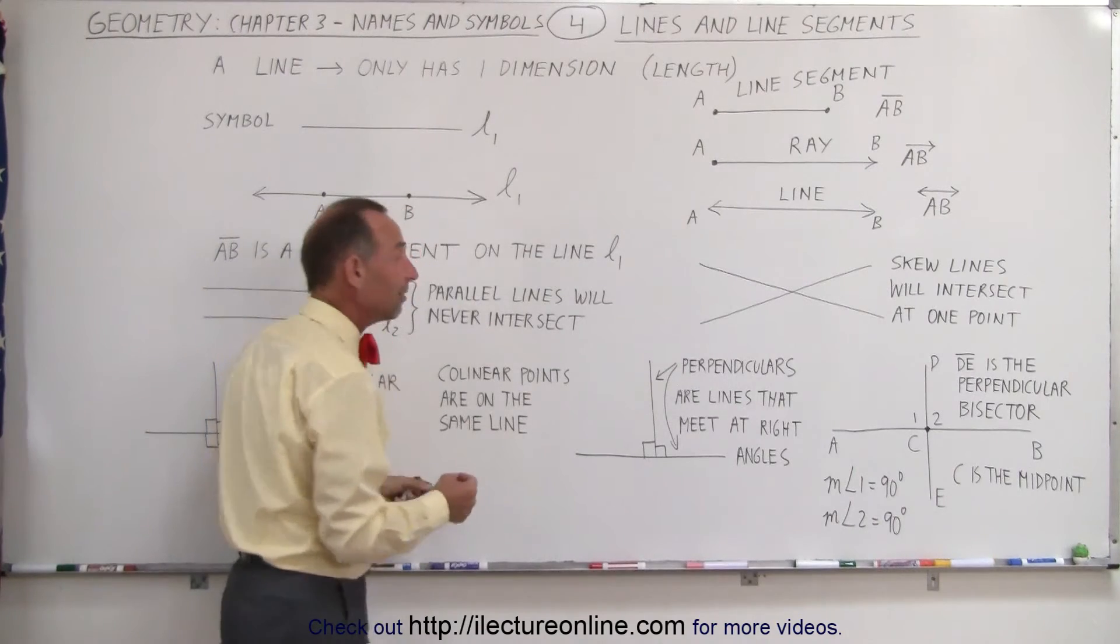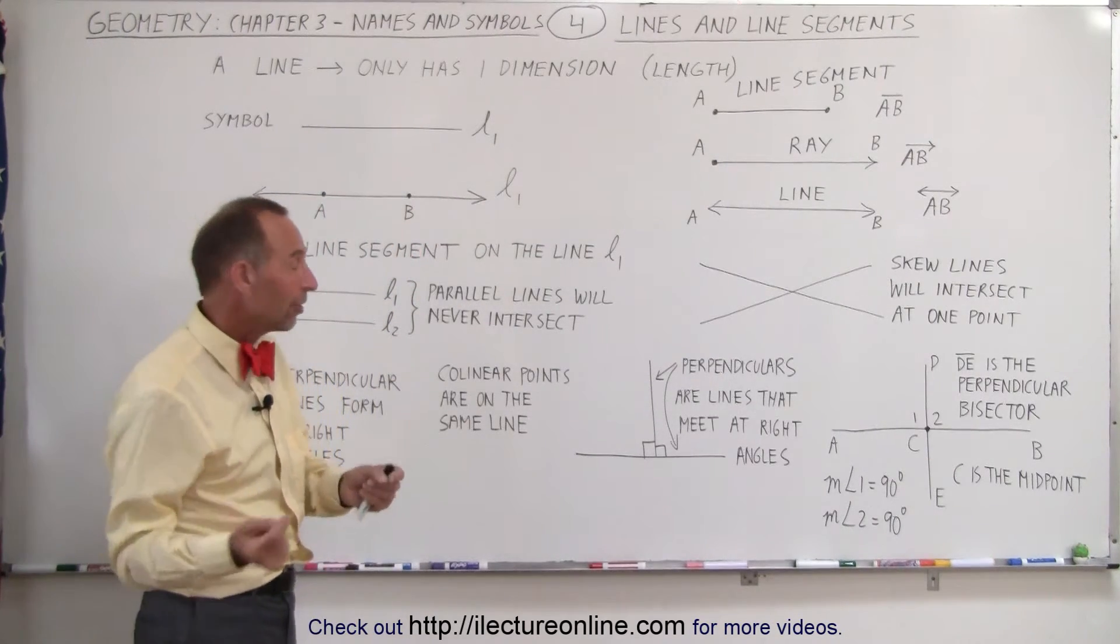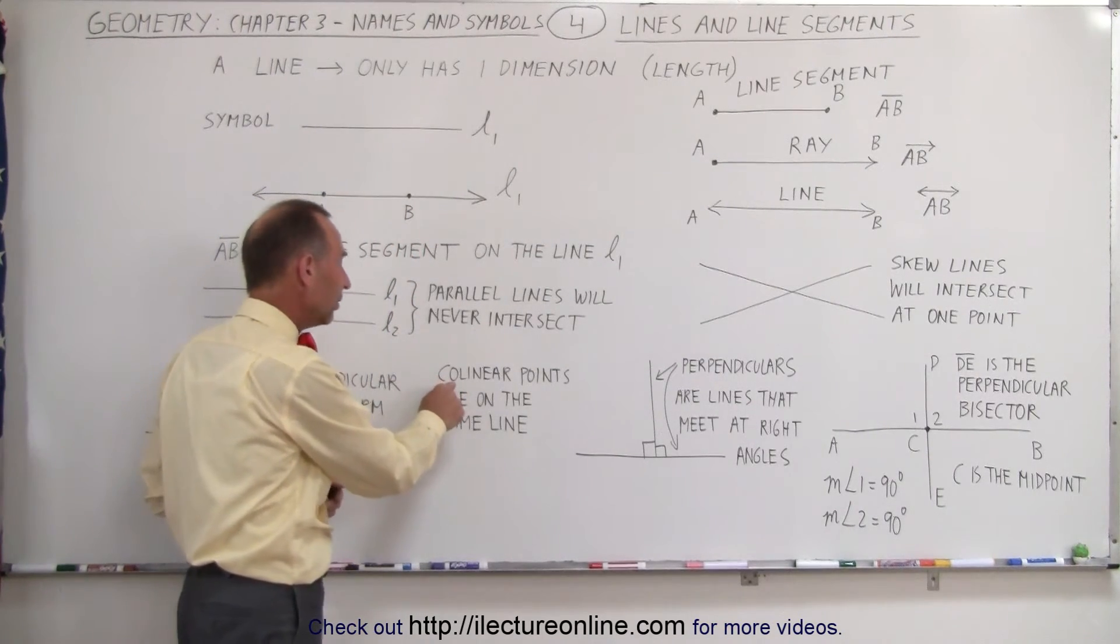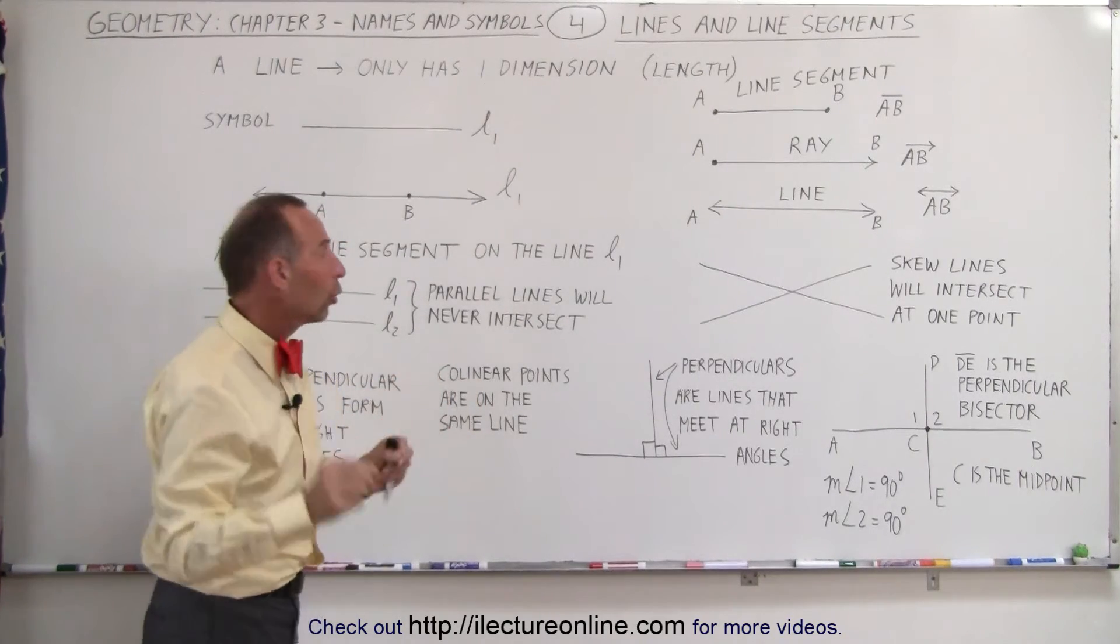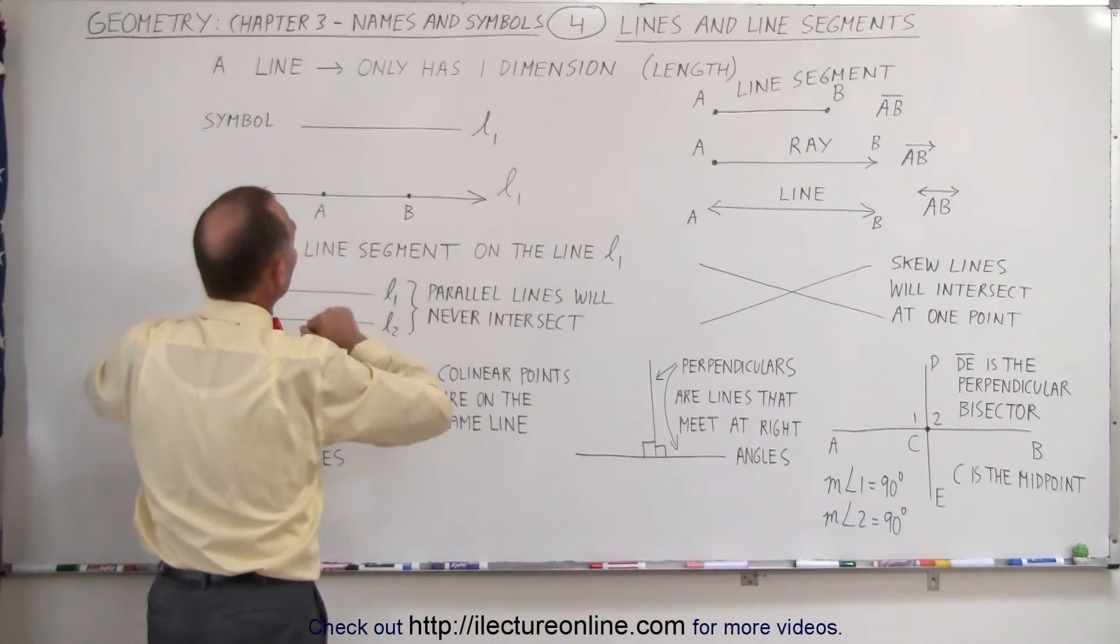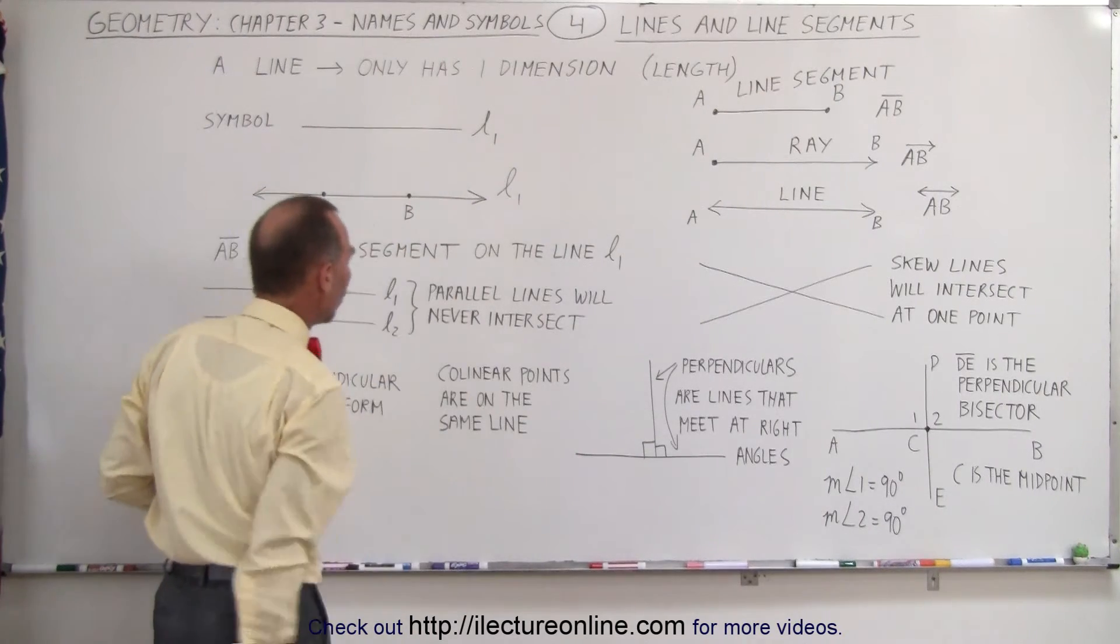Collinear points. Well, that means that both of them are on the same line. Co means together, and so together on the line, two points are collinear. For example, A and B are two collinear points because they're both on the line L1.